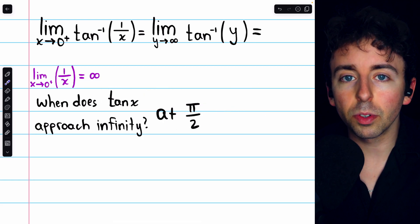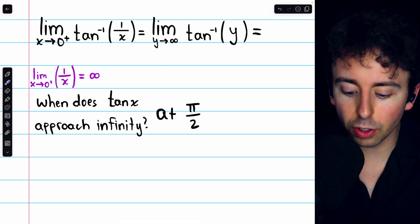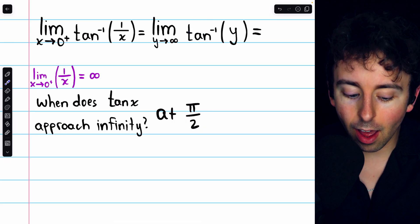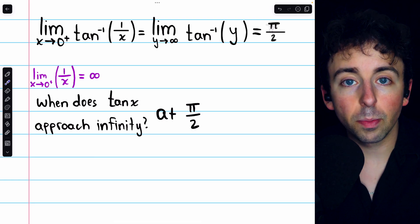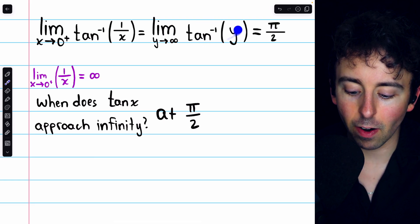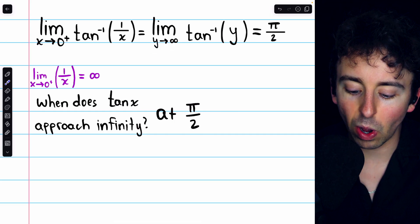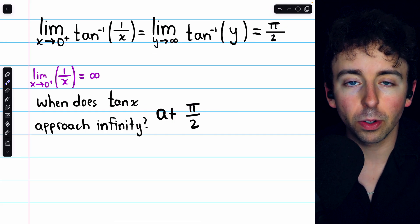Since the tangent function goes to infinity at π over 2, the arctan of infinity is π over 2. Or to be more precise, the limit of the arctan function of y as y goes to infinity is π over 2.